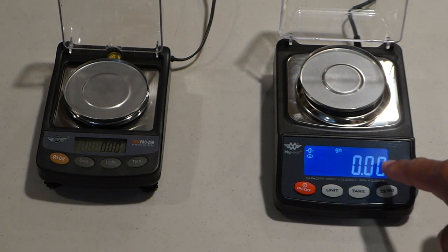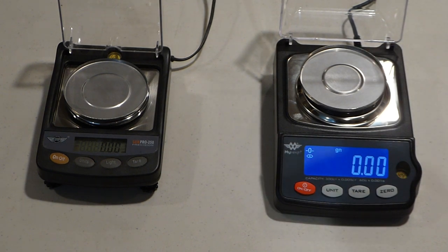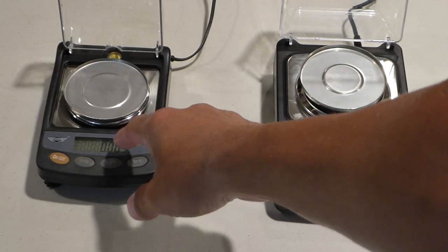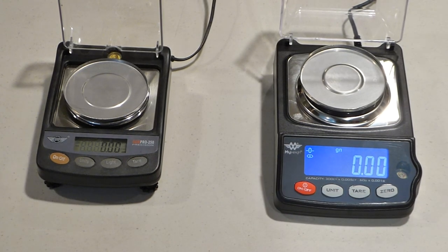So you can see the display here, way easier to read, you can actually see it on the camera, versus the old GEMPRO 250 has a much smaller display, much more difficult to read.